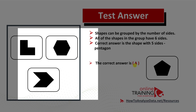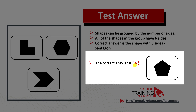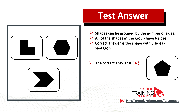The correct answer is Choice A — the pentagon, which only has five sides. Hopefully you've nailed this question and now know how to answer similar questions and problems on the test.